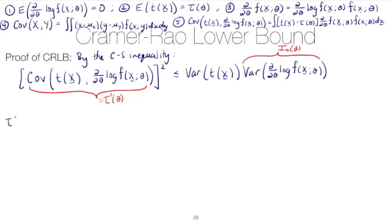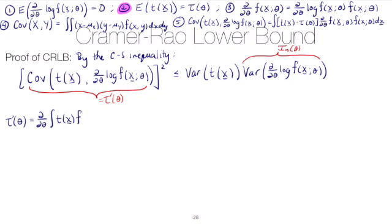Let's start with the derivative of tau of theta. Since tau of theta equals the expected value of our estimator — because we're assuming an unbiased estimator — the derivative of tau of theta equals the derivative of the expected value of t of x. Here we use the law of the unconscious statistician, which says to take t of x and multiply by the PDF of x.